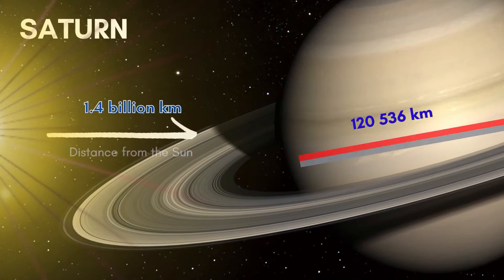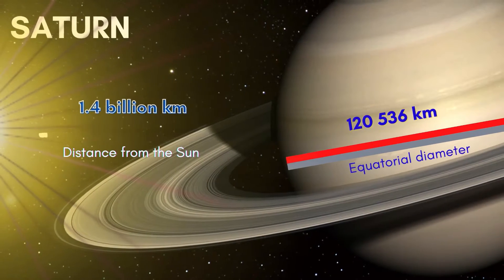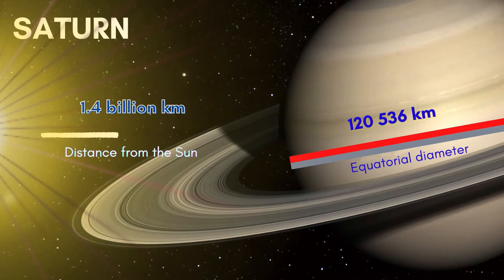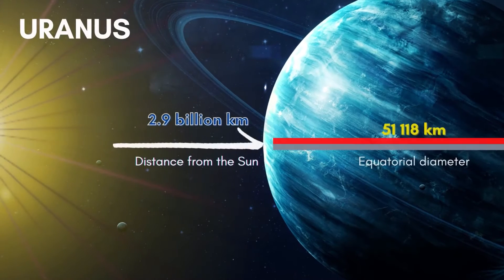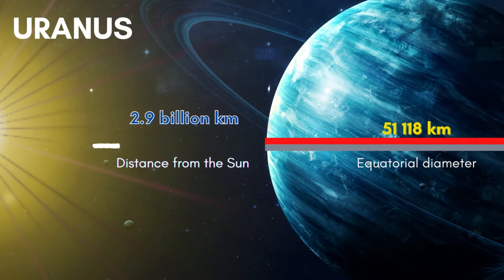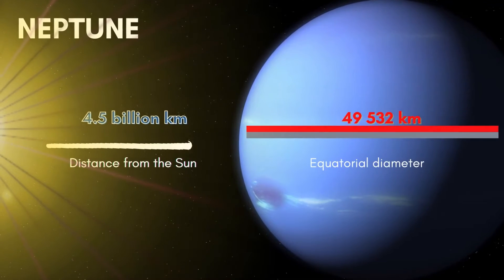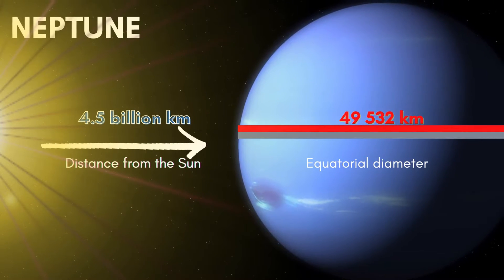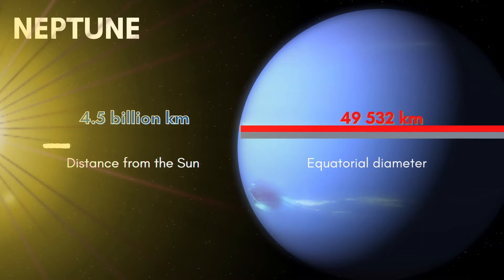The fifth planet in the outer planets is Jupiter, with 774 million kilometers distance from the sun and an equatorial diameter of 142,984 kilometers. This is Jupiter. It is followed by Saturn, which has a distance from the sun of 1.4 billion kilometers and an equatorial diameter of 120,536 kilometers. This is Saturn. Next is Uranus, with 2.9 billion kilometers from the sun and an equatorial diameter of 51,118 kilometers — this is Uranus. And the last planet is Neptune, with a distance of 4.5 billion kilometers from the sun and an equatorial diameter of 49,532 kilometers. This is Neptune.